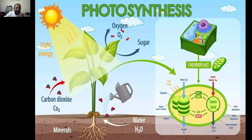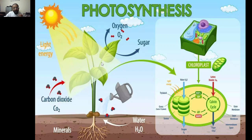The sun produces light which falls on the plant leaves. There are different pigments called chlorophyll which absorb this sunlight. Once absorbed, it undergoes two pathways. It breaks down water molecules present in the plant into oxygen, and it also involves a cycle called the light-dependent reaction.